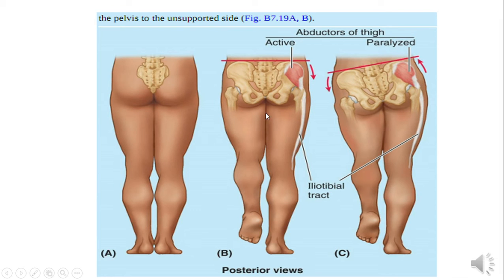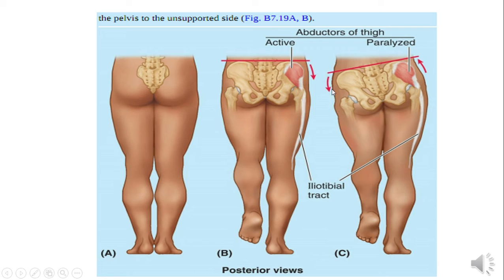When testing gluteal muscles by observing the patient's gait, this is called waddling gait. If the Trendelenburg test is positive with tilting on the left side, it indicates that the muscles of the right side are paralyzed.